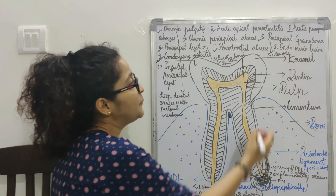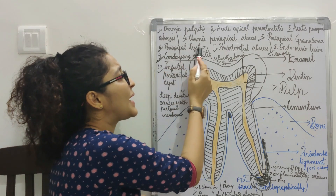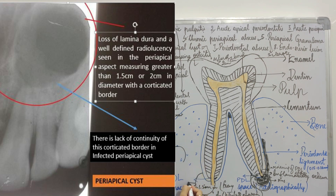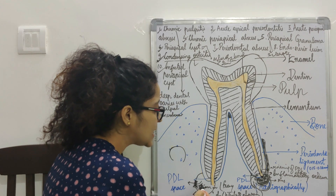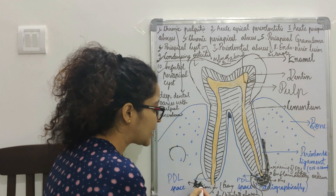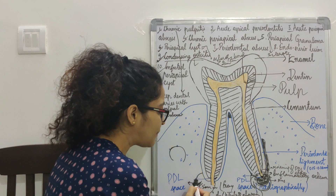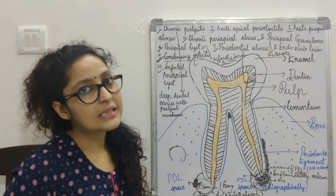Coming to infected periapical cyst — in a periapical cyst, you see a well-defined radiolucent lesion surrounded by a sclerotic border. In an infected periapical cyst, because it has now become acutely infected, there will be discontinuity of this sclerotic border, which is suggestive of infected periapical cyst.